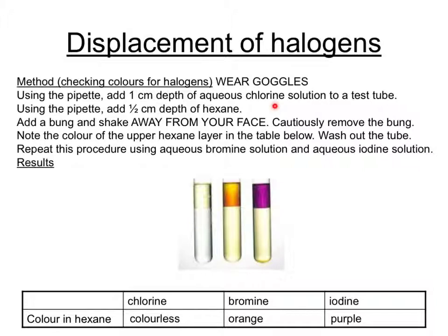In order to identify the products of these reactions, we often first add each of the halogen solutions to an organic liquid like hexane. If you shake hexane, which starts off as a colourless solution, with solutions in water of chlorine, bromine and iodine, we get quite distinctively coloured solutions. Iodine gives a purple colour in the hexane layer, bromine an orange colour, and chlorine a colourless solution.